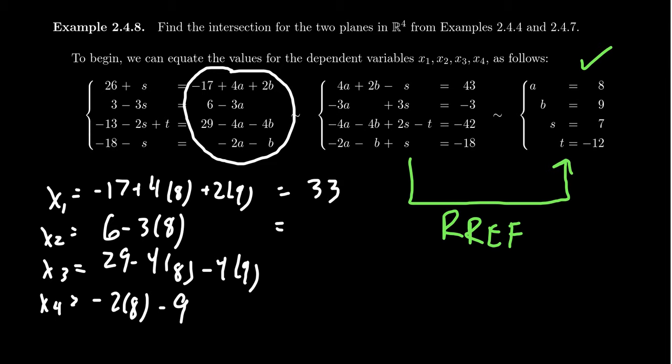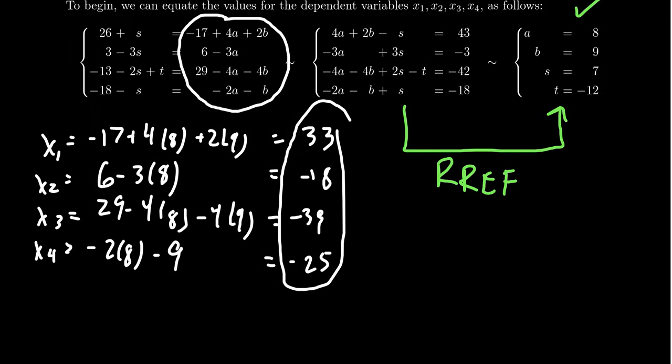If we do this for the next one, you get negative 18. For X3, this turns out to be negative 39. And for X4, you end up with negative 25. And so this right here is the vector I claim belongs to both planes. This right here is our X: [33, -18, -39, -25]. This would be the solution. This is the vector that's common to both planes.